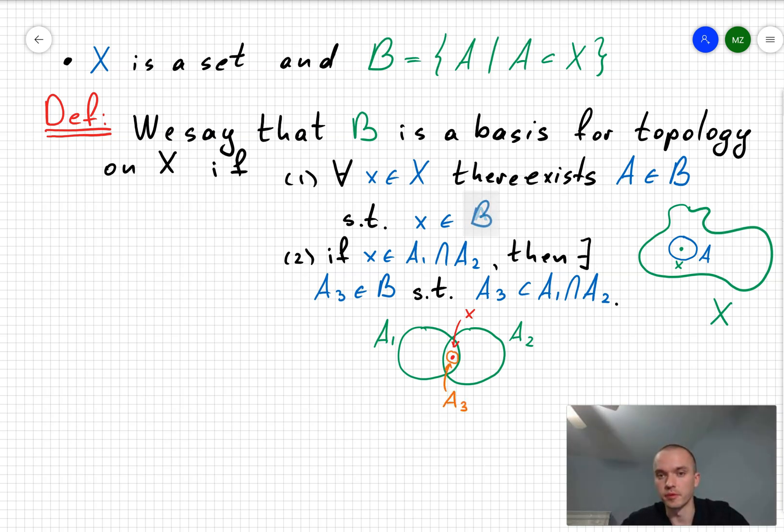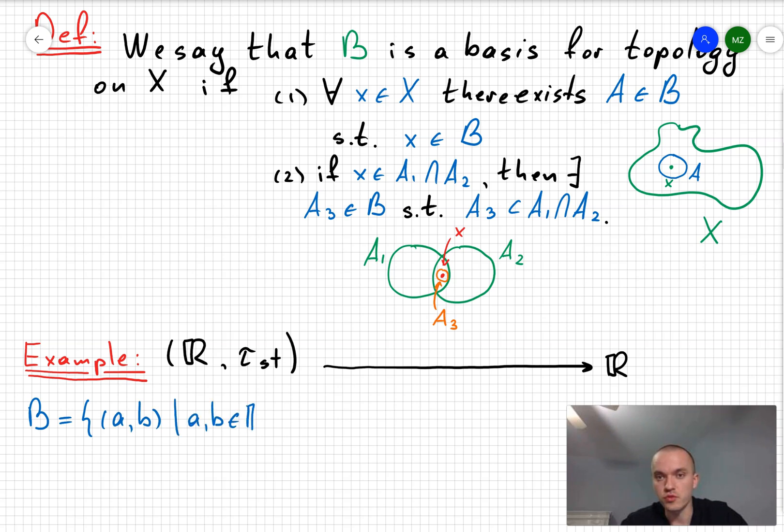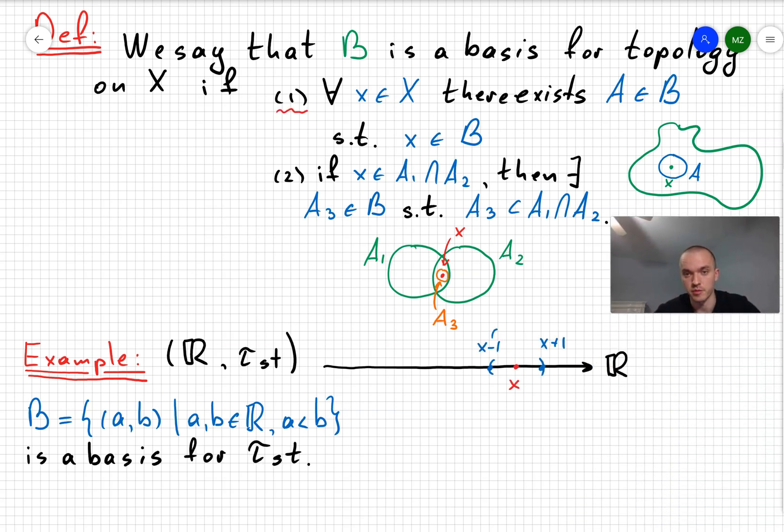Let's do some example. Consider the real line in the standard topology. And I'm going to define B as a union of open intervals (a,b). I want to show that B is a basis for our standard topology. For that, I need to check the first and second assumption.